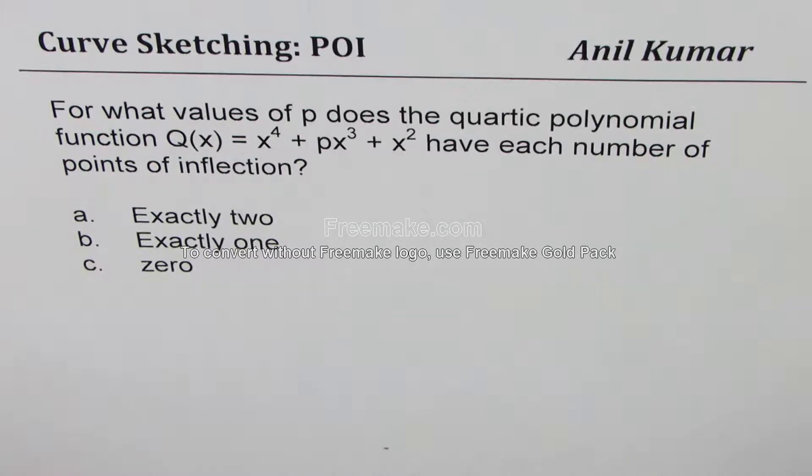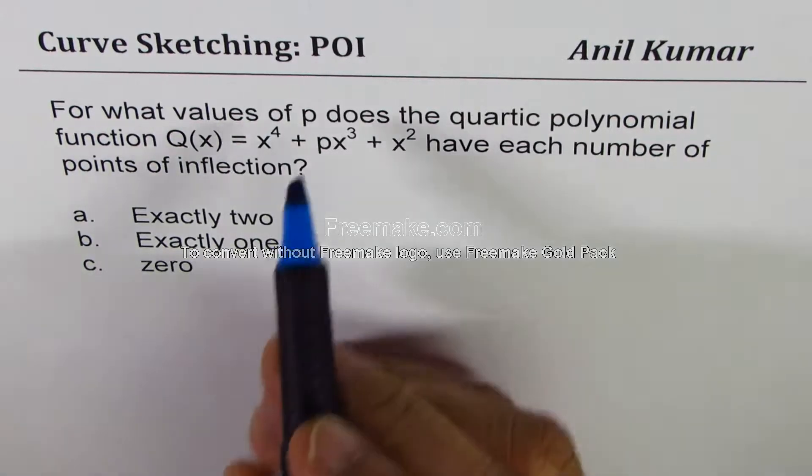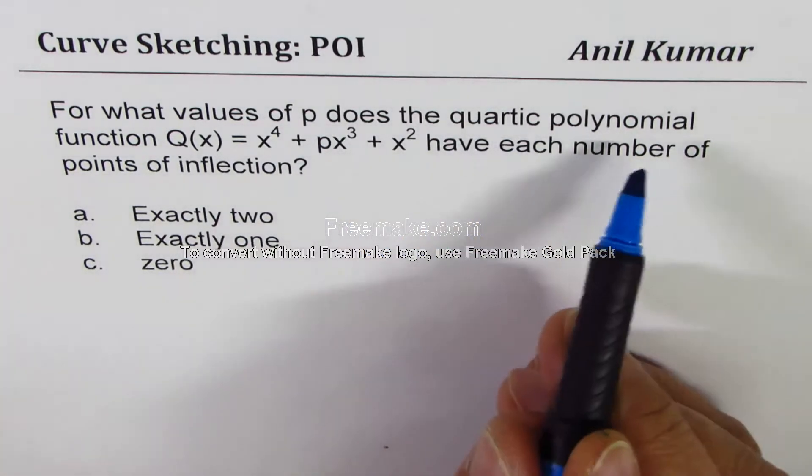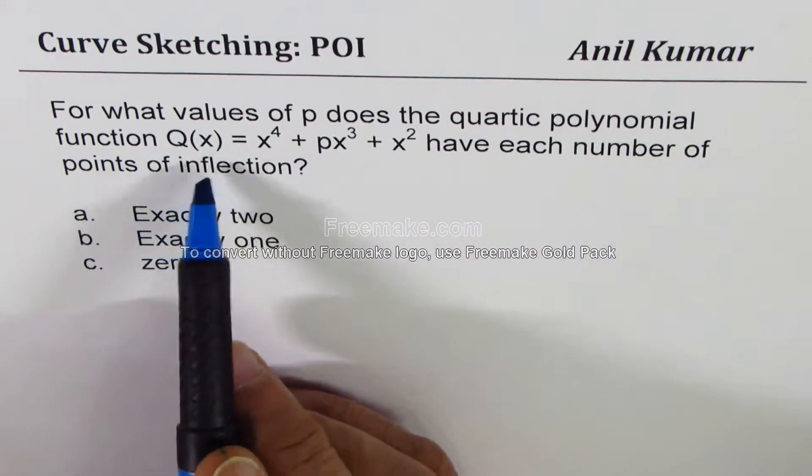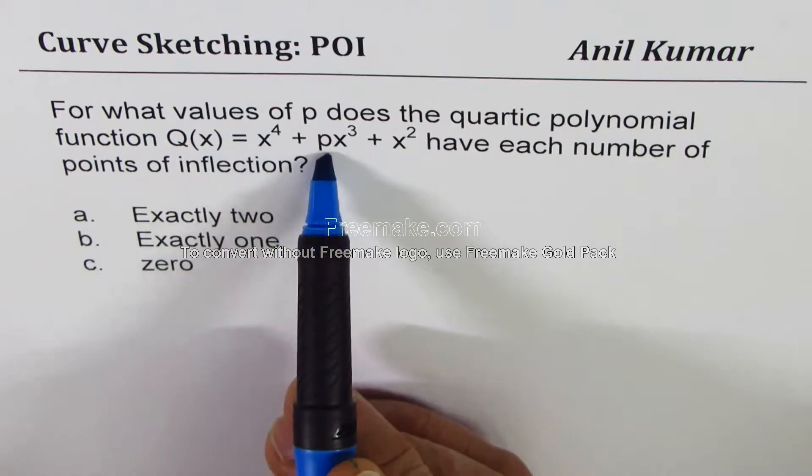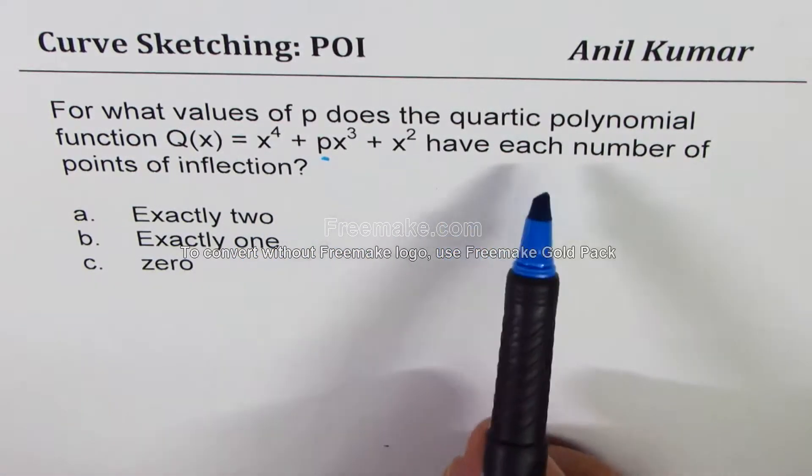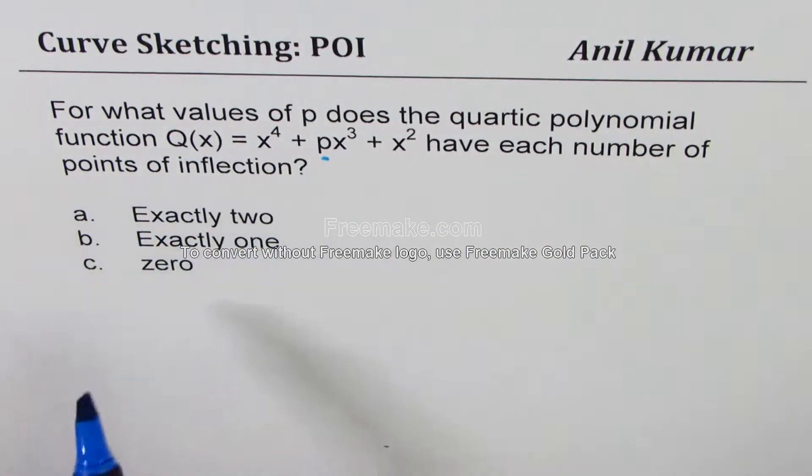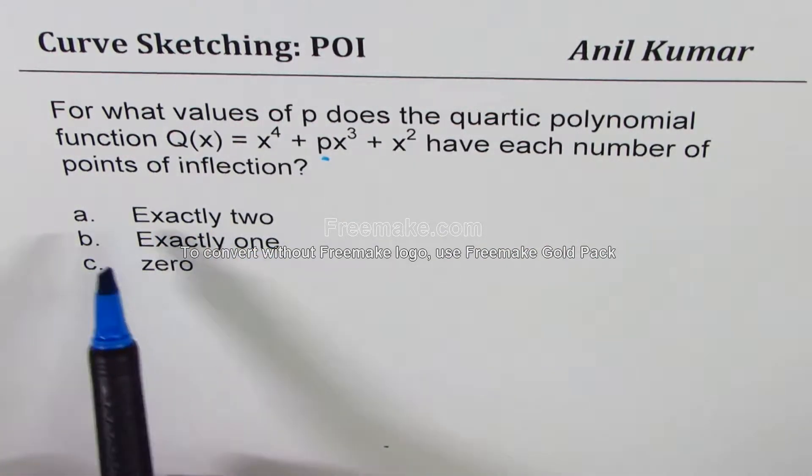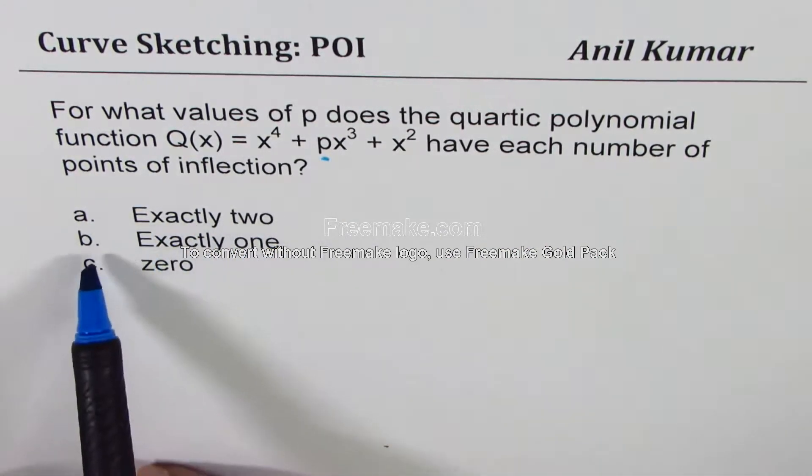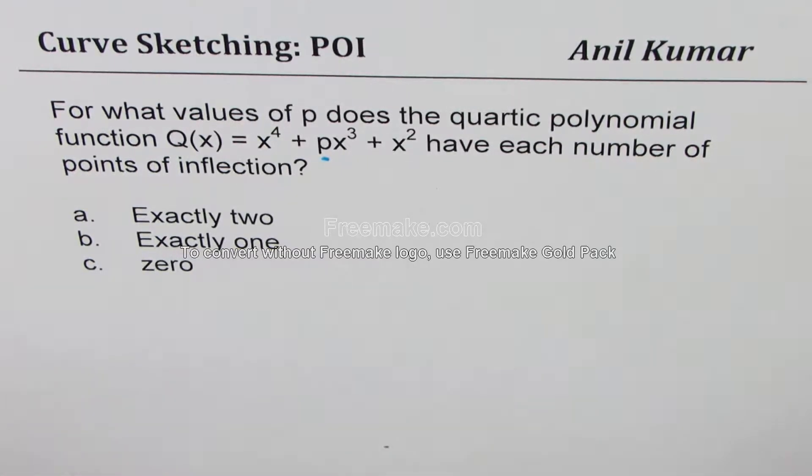The question here is: for what values of p does the quartic polynomial function Q(x) = x^4 + px^3 + x^2 have each number of points of inflection? So there are three cases: exactly two, then exactly one, and zero.